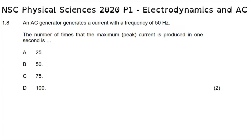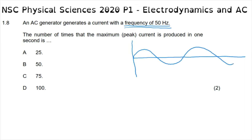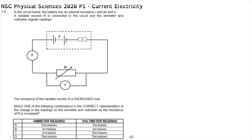Question 1.8 reads: an AC generator generates a current with a frequency of 50 Hz. The number of times that the maximum or peak current is produced in one second is... A frequency of 50 Hz means 50 complete waves per second. In each complete wave, the peak is achieved twice, so at 50 Hz the peak current is achieved 100 times per second — making the correct answer option D.